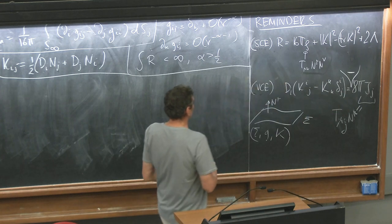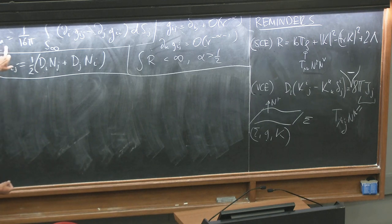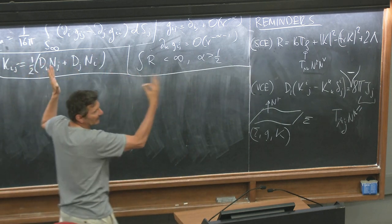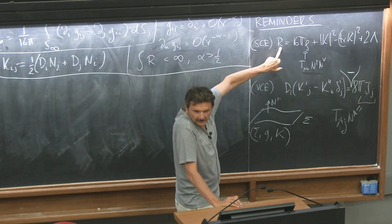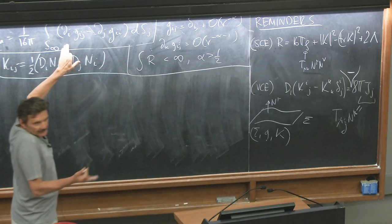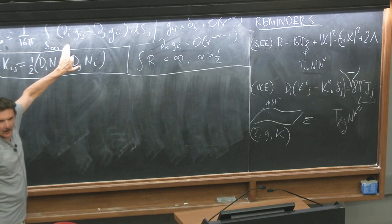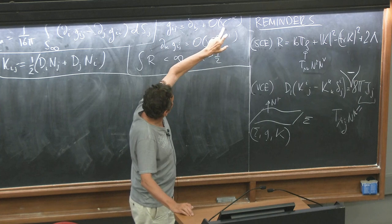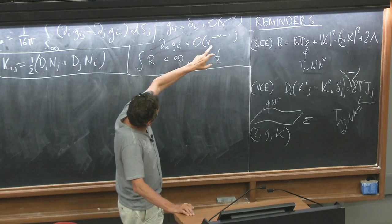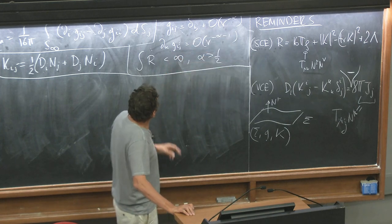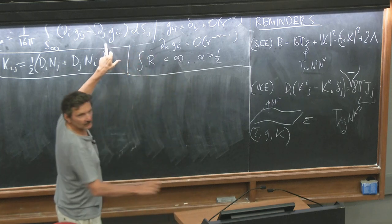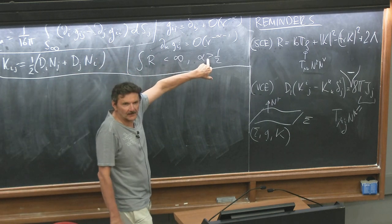We derived the mass formula: you collect the second derivatives of the metric given by this expression, write them as a divergence, and call this the mass integrand. It looks completely arbitrary, but if you assume the metric is asymptotically flat — going to a flat metric at rate r^α with α > 1/2 — and the integral of the scalar curvature is finite, this is well-defined. If you allow α = 1/2, hell breaks loose.